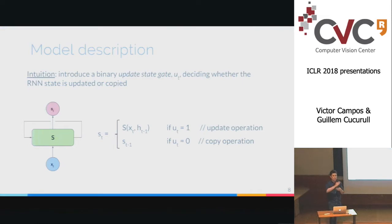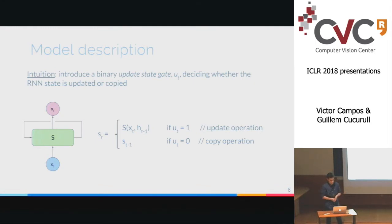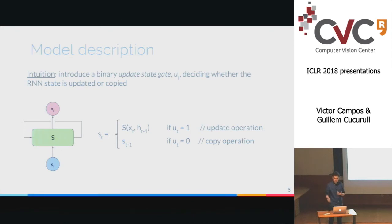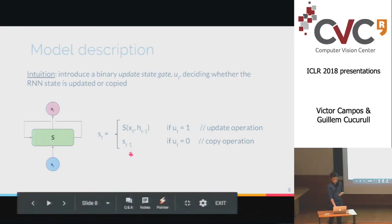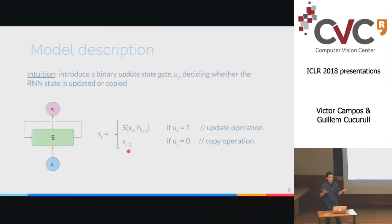The intuition is to introduce a binary switch with two possible behaviors at every time step. One option is to update the state — that's a regular RNN operation. The other is to simply skip that step. We propose a new gate which is binary, either one or zero. When this gate is one, we update the state. When it's zero, we skip that operation. If the gate is one, we apply the RNN transition model. If it's zero, we simply copy the previous hidden state, with no dependency on the current input x of t.